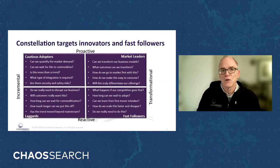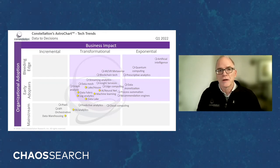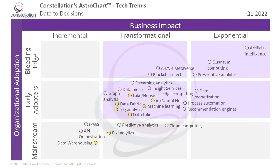Whether it's a market-leading company or a fast follower, they're embracing new technology. When we look at technology, we do so through the lens of our astro chart. This is the Q1 2022 chart for data to decisions technology. On that vertical axis, we have organizational adoption from mainstream to early adopter to bleeding edge. On that horizontal axis, the incremental to transformational to exponential. So top right, you see general artificial intelligence — not the AI and ML we talk about mostly today. This is machines that can think, and it's almost science fiction, but a little bit closer to reality. Quantum computing — a little bit more real, with some early innovators looking at the technology and certainly an exponential promise, but very bleeding edge.